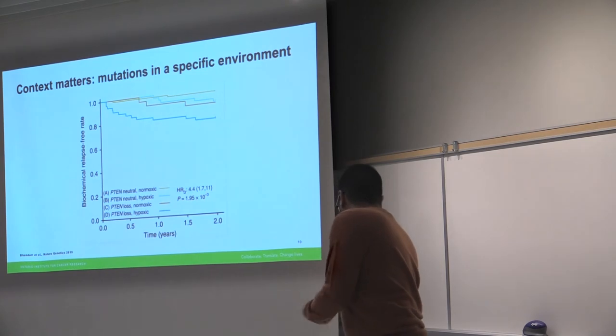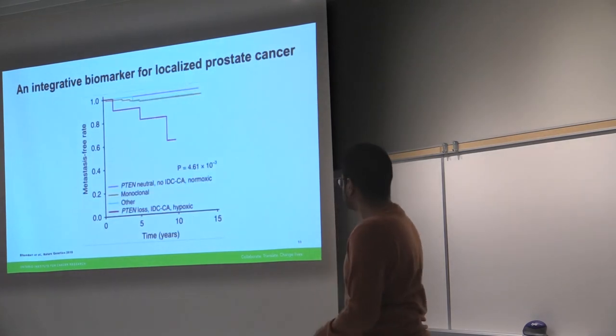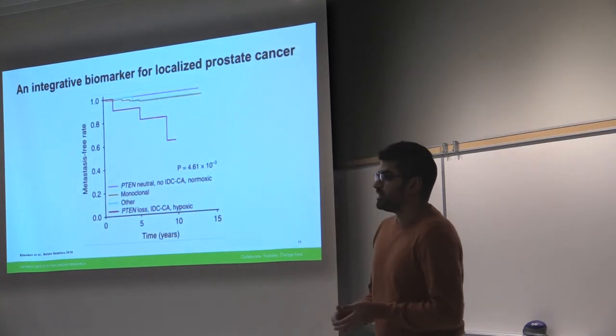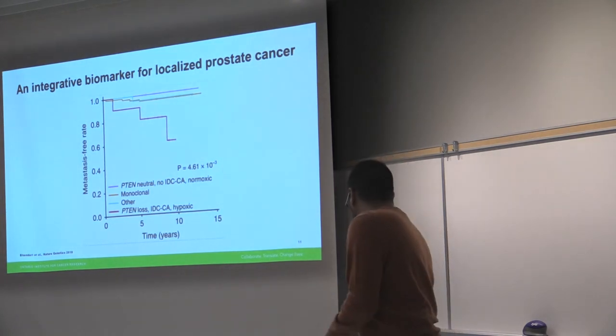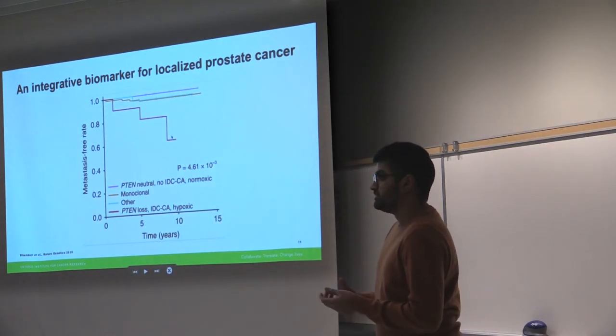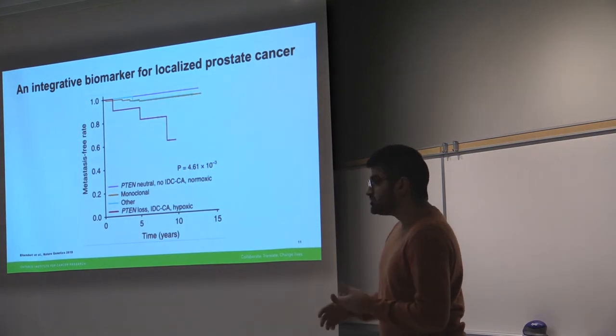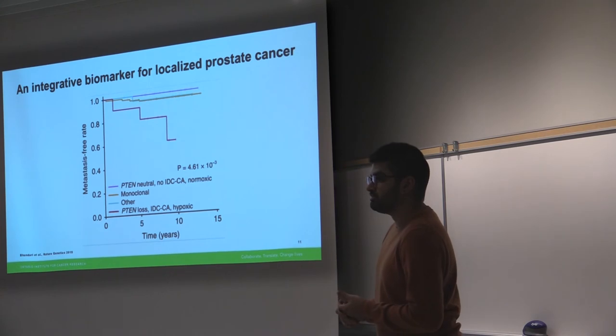And then we can begin to layer more information on top of this. So this is the same plot as before, but now we're also adding pathology information and adding information about how tumors evolve over time, which is also important. And now we can begin to find this subgroup, the red subgroup, where the relapse rates are really high, so 60%. And for intermediate risk prostate cancer, this is a very high relapse rate where patients can be cured. We're seeing 60% relapse rates within this small subgroup.